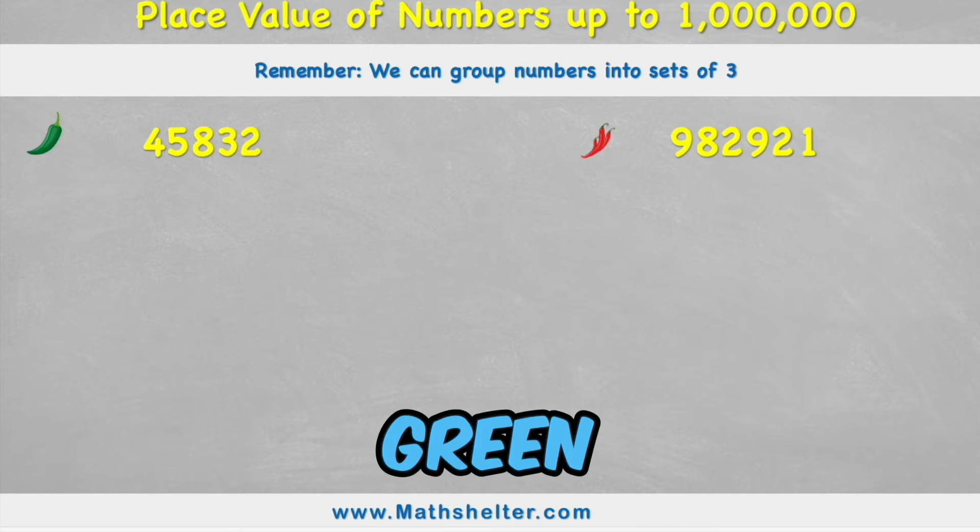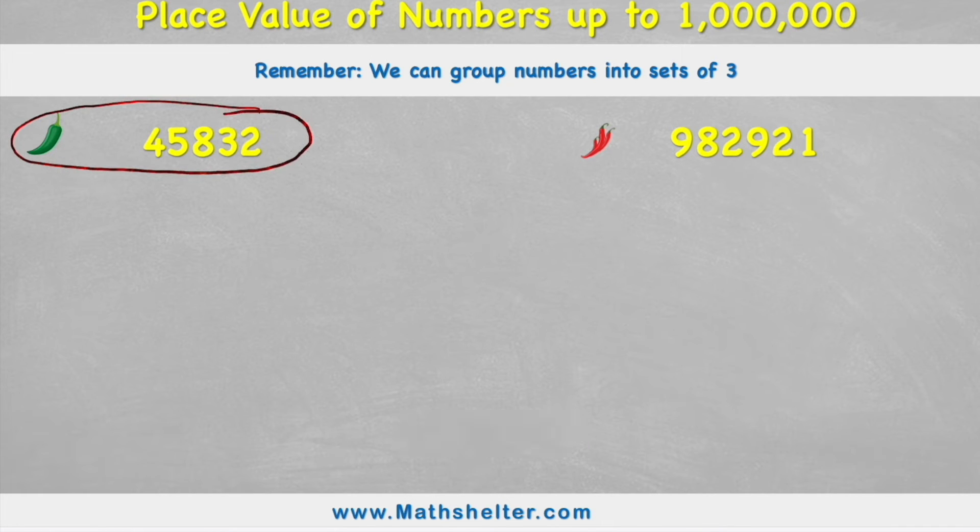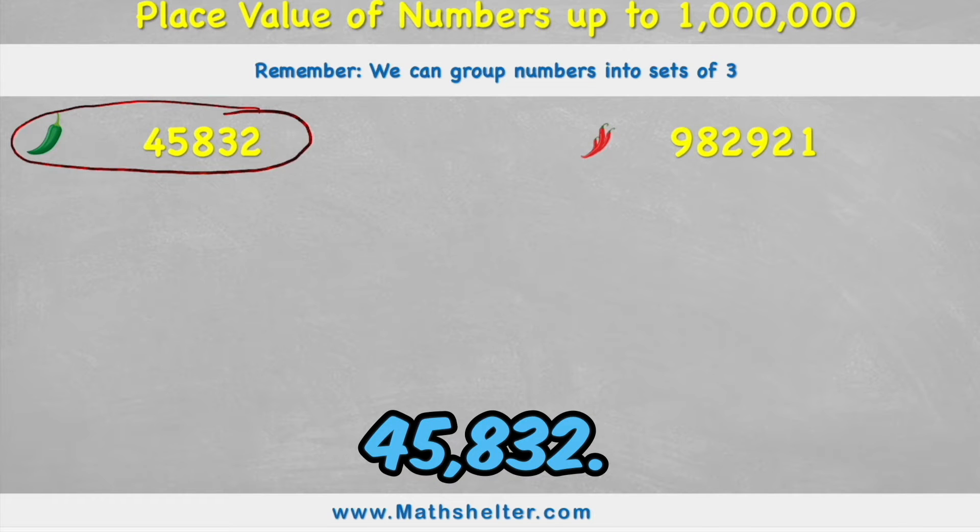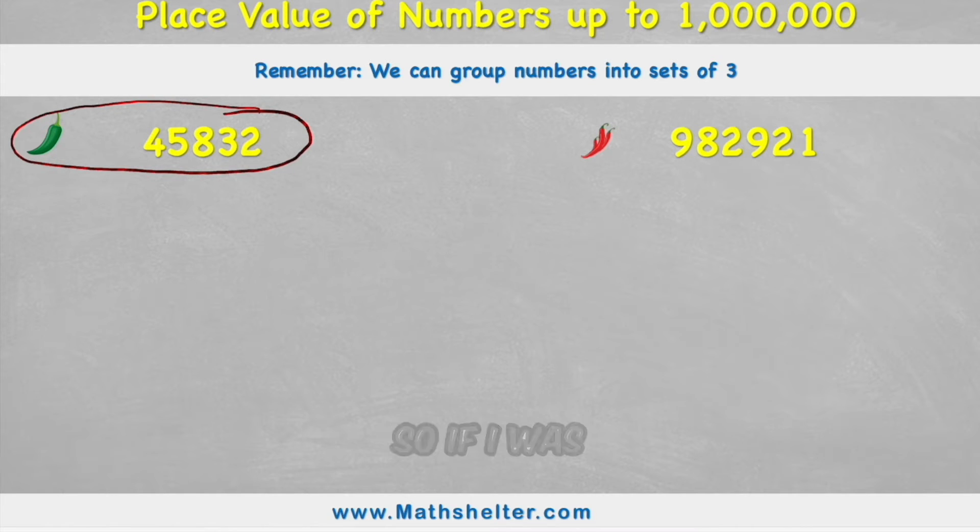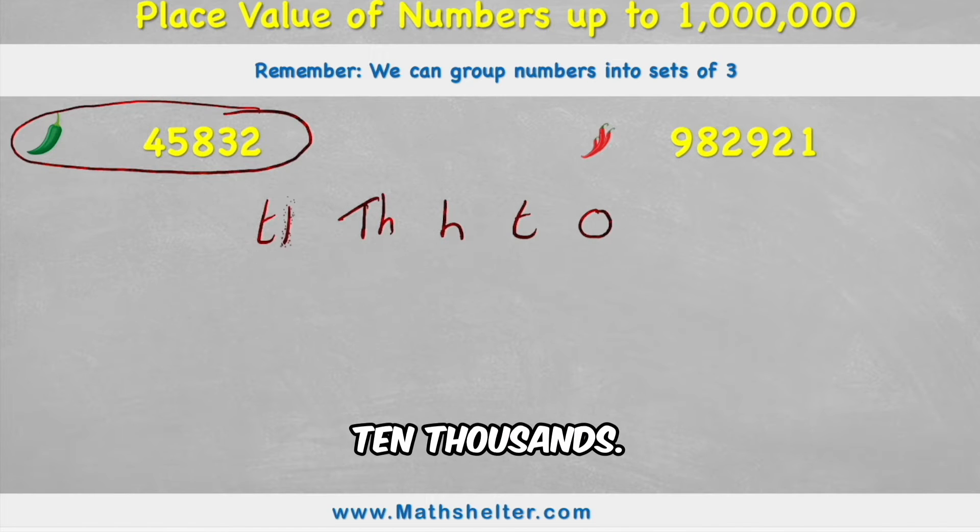So if we look at this green chili challenge, I can see I have the number 45,832. So if I was to draw my place value chart, I would have my ones, tens, hundreds, thousands, and in this case I'd need 10,000.